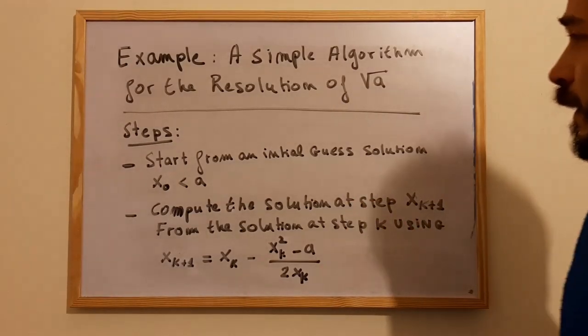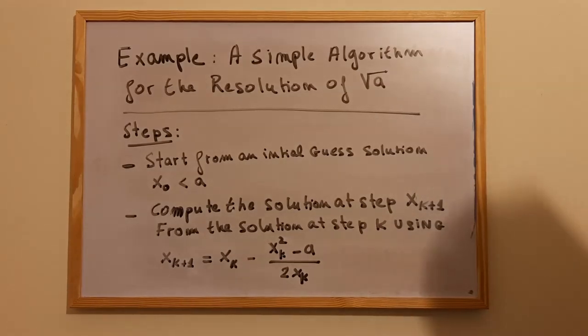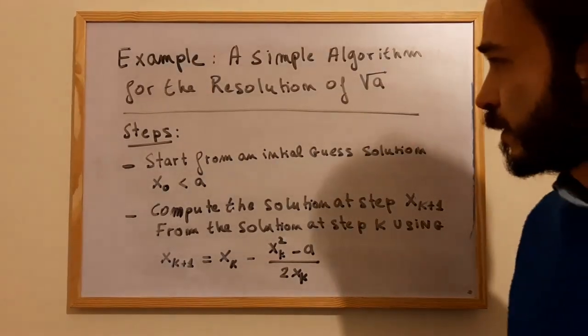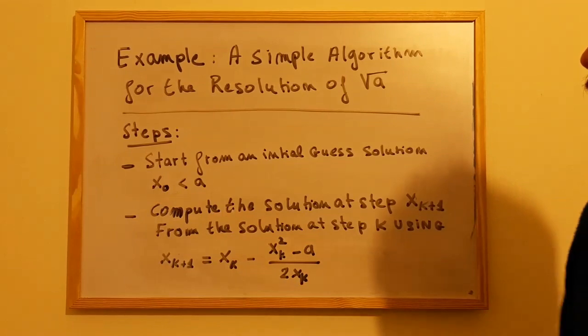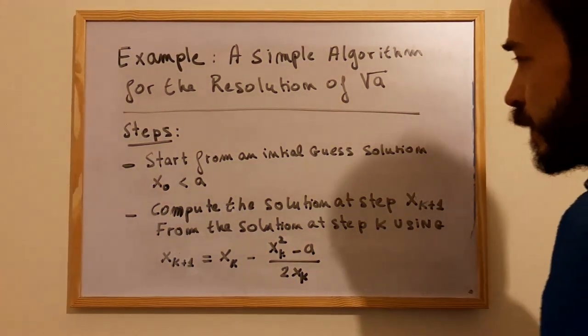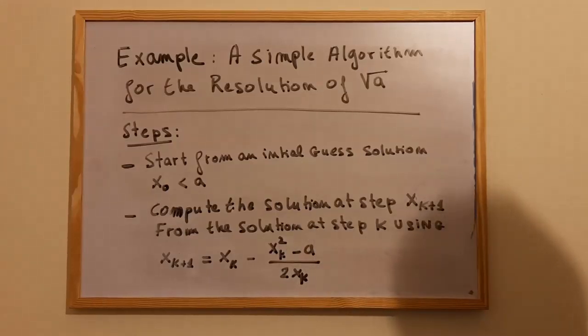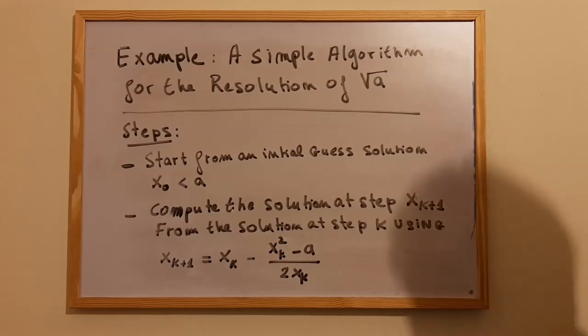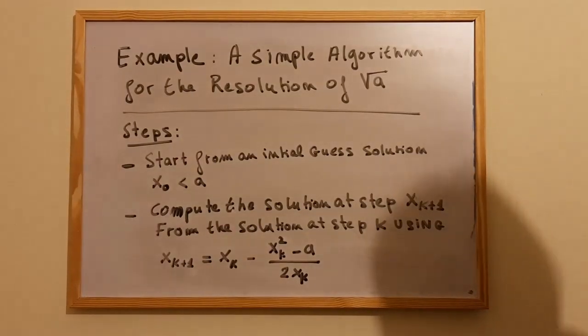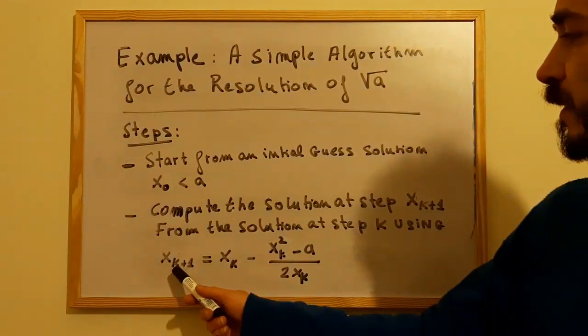Basically, we have to start from an initial guess solution, we call it x0, that must be inferior to a. And then we compute the solution at step k+1 from the solution at step k using the following formula: x_{k+1} = x_k - (x_k^2 - a) / (2x_k).